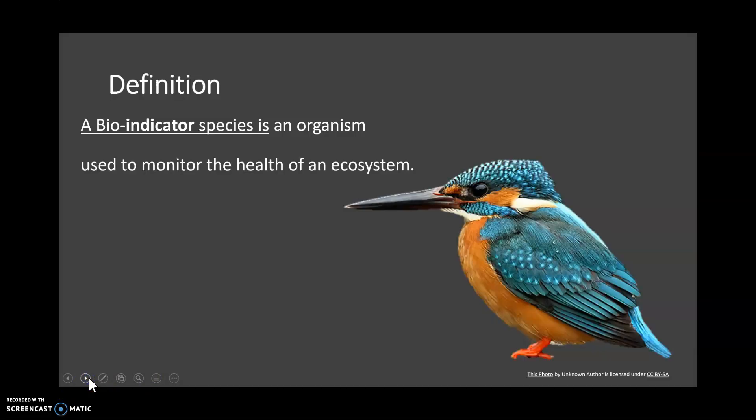To give you a definition: a bio-indicator species is an organism used to monitor the health of an ecosystem. That's probably the simplest definition — a bio-indicator species, or indicator species, is an organism used to monitor the health of an ecosystem.